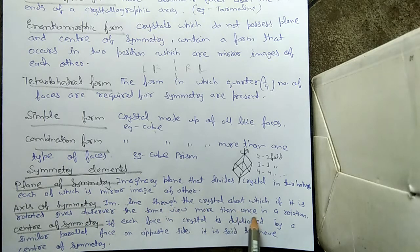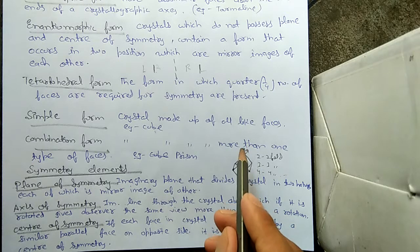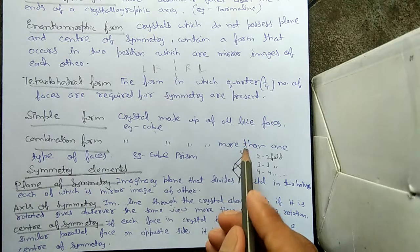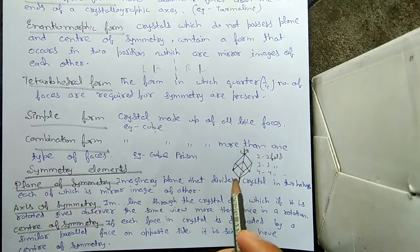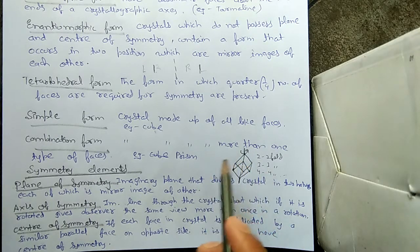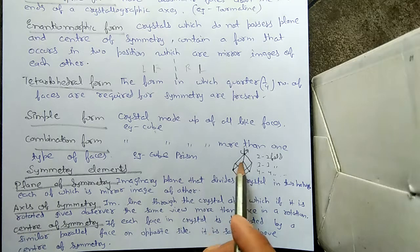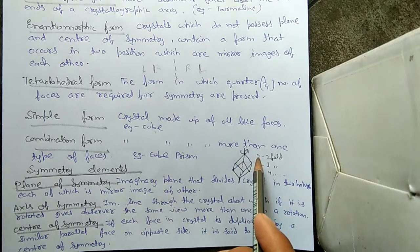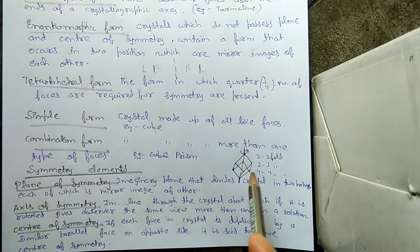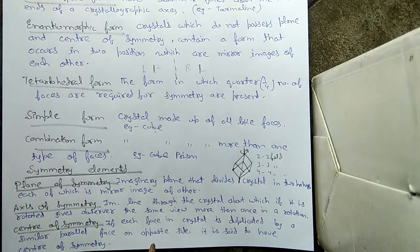The axis of symmetry is an imaginary line through the crystal about which, if it is rotated, it gives the observer the same view more than once in one full rotation. For example, with a cube and an imaginary line passing through it, when rotated it gives the same view more than once. If it gives the same view two times in one rotation it is called two-fold; three times is three-fold; four times is four-fold, and so on.